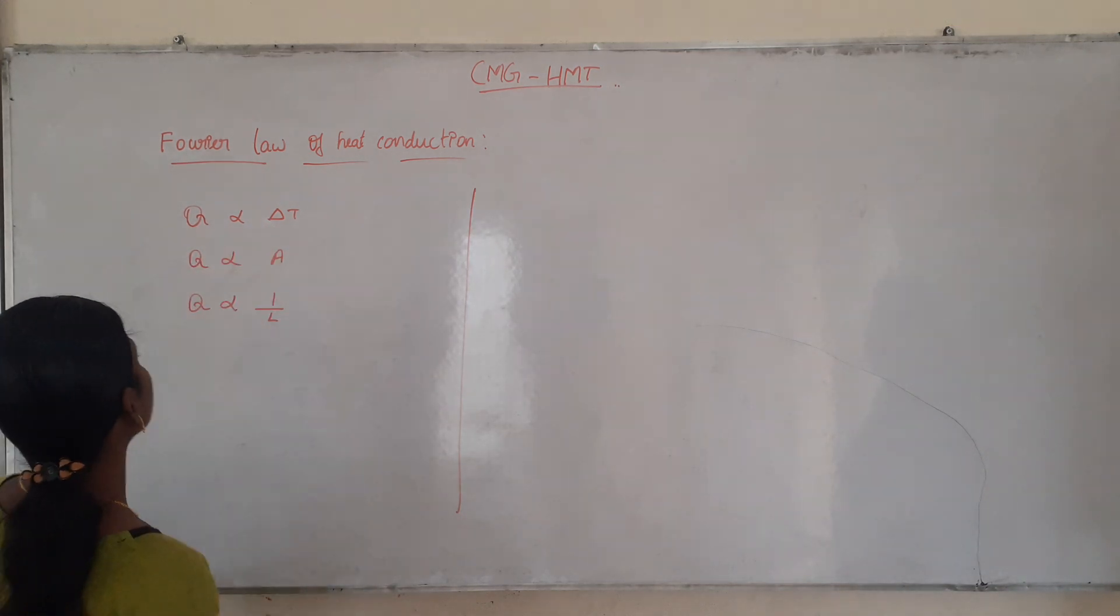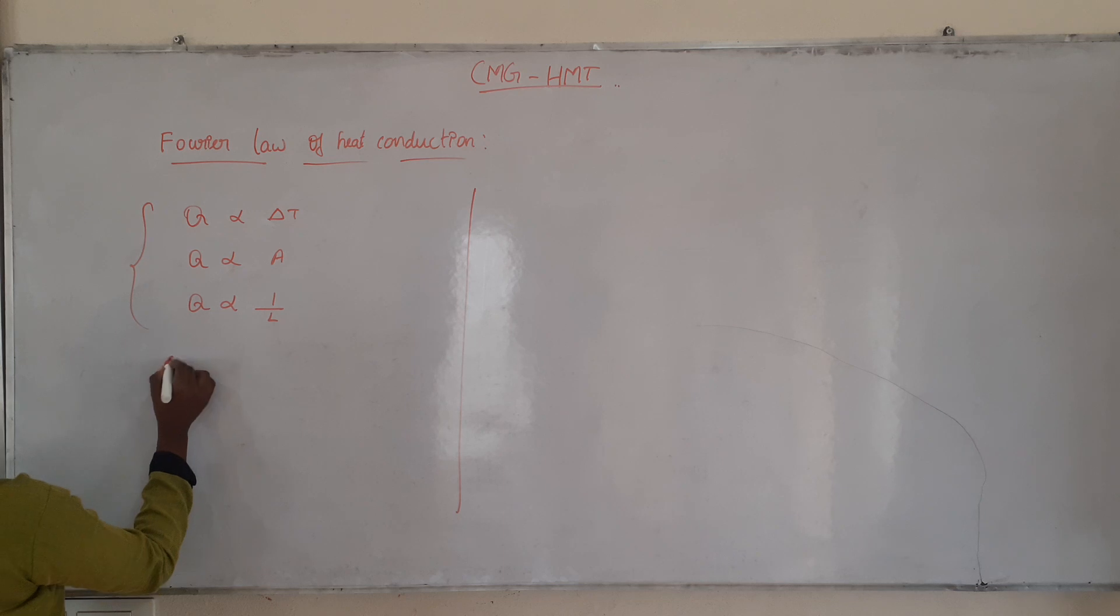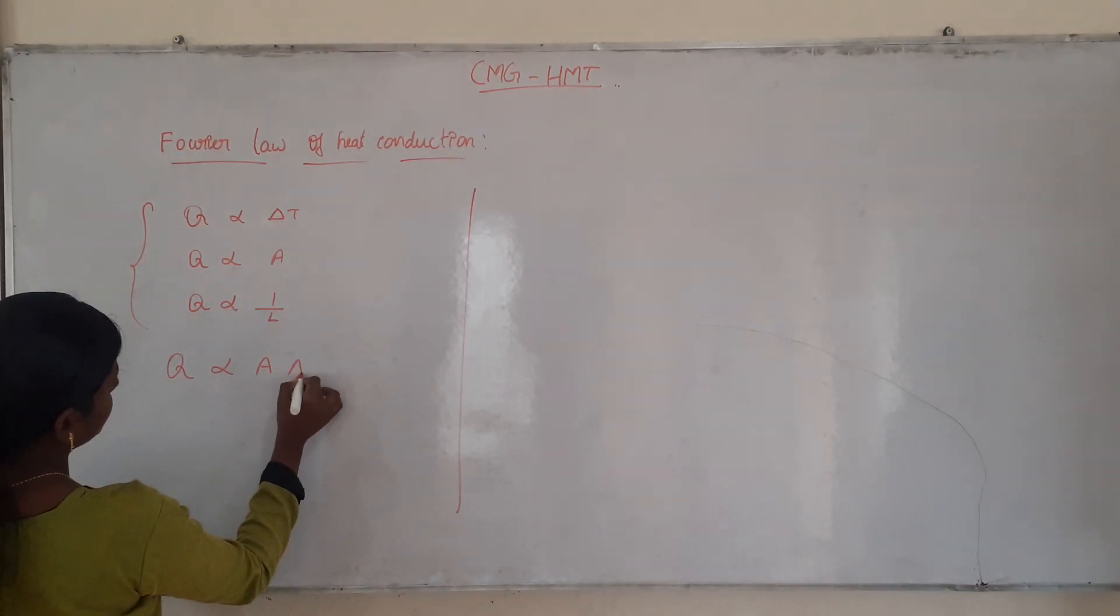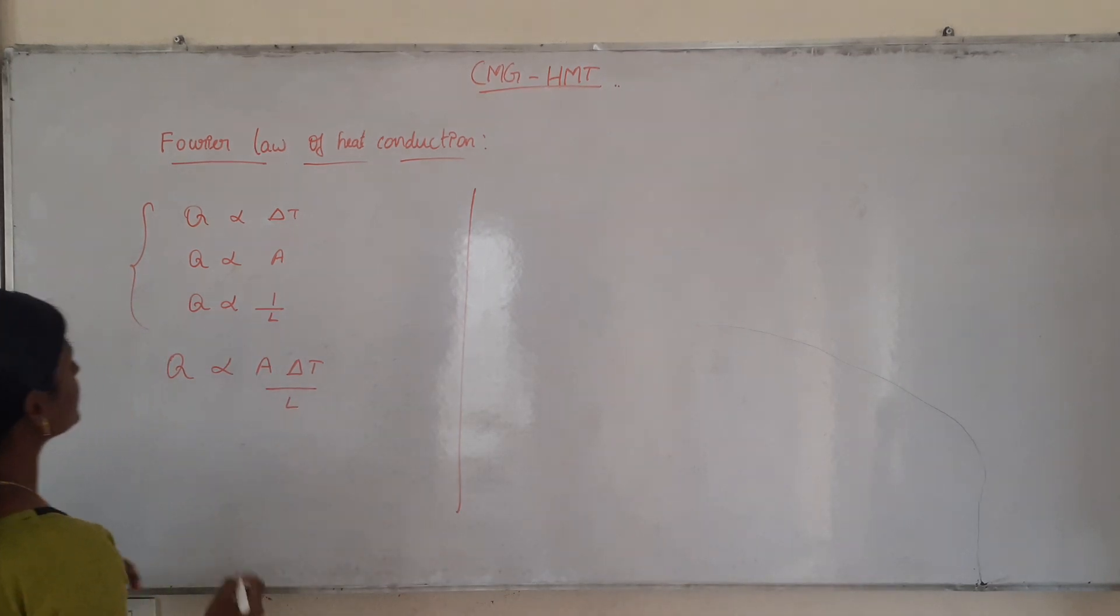In the main equation you can combine all of these. How? Q is directly proportional to A into del T divided by L. This is the equation.